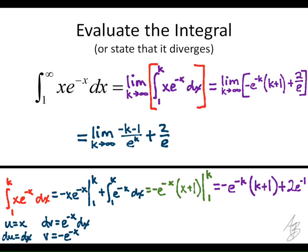We're going to take the limit as k approaches infinity. I distributed this negative here to the k and the 1. So we got negative k minus 1. And I move the e to the negative k to the denominator.